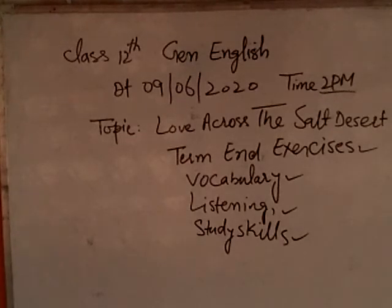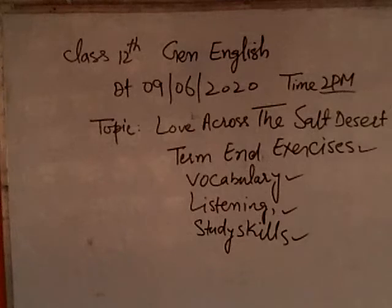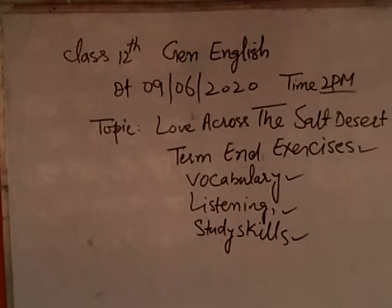Question eleven is a true or false question. 'The absence of a man and a camel from the village was significant because it means someone had gone across the border' — this is false. 'It means a camel could be confiscated, that is, seized or robbed by the officials' — this is also false.